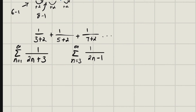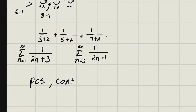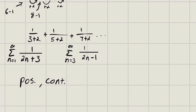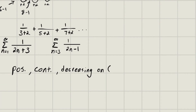Now let's check the integral test conditions. Looking at this carefully: both functions are positive for their given n values — so both positive. They are both continuous on the interval we're interested in, and they are decreasing, because as n grows large the denominators grow in size causing the overall value to shrink. The interval is from three to infinity for the first form, and one to infinity for the second, both with closed brackets.